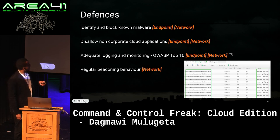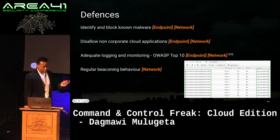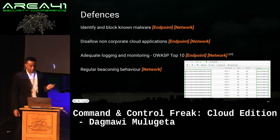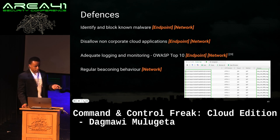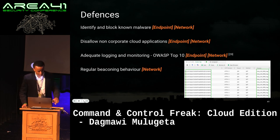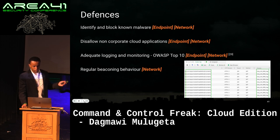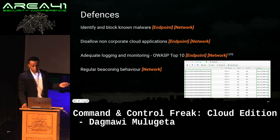From the defensive side, this presents a new set of challenges. The first defense — and I know it sounds simple — is try not to let it get to the C2 stage. Try to block the malware as best as possible. Because once it gets to the C2 stage, it's very challenging to prevent this sort of traffic, especially if it's using a cloud application provider that is popular in your network.